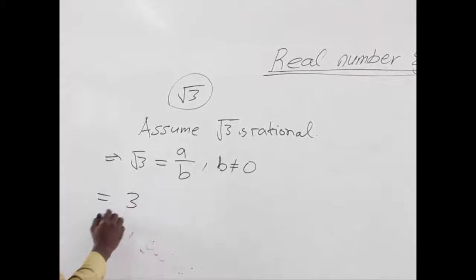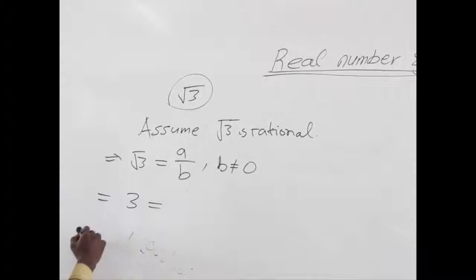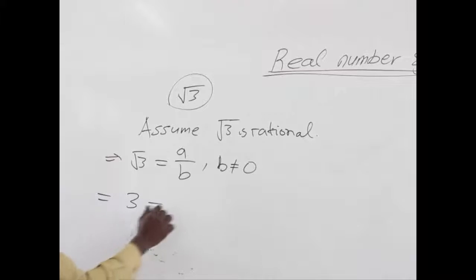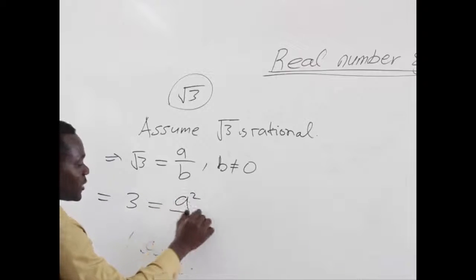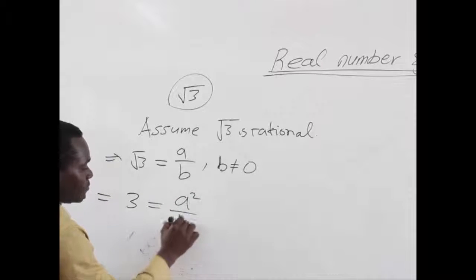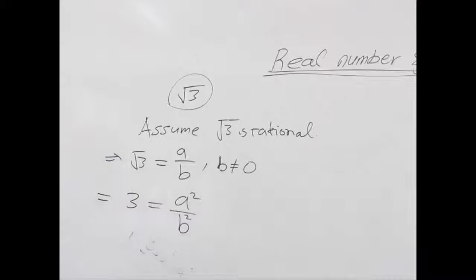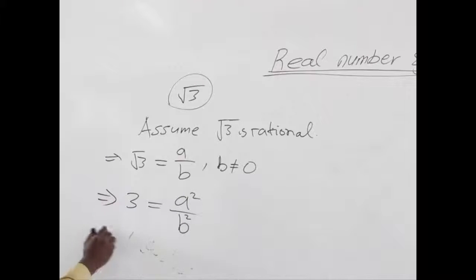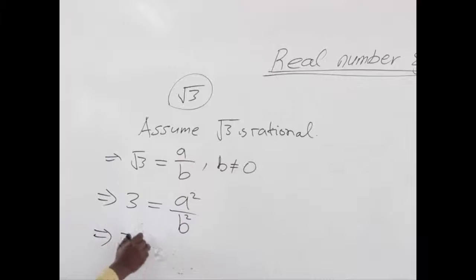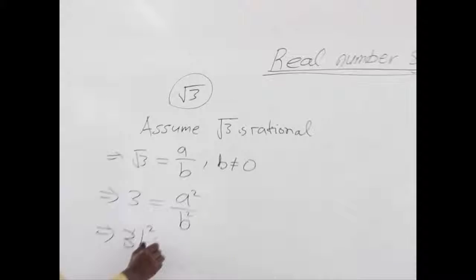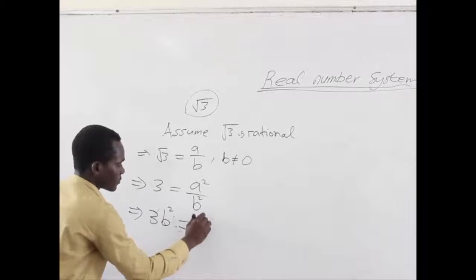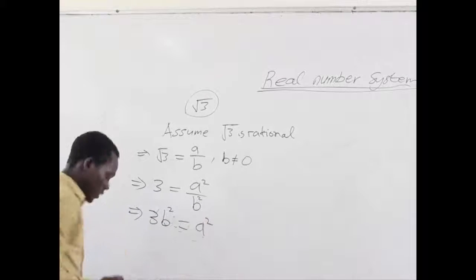When we square both sides of the equation, we are going to get 3 equals A squared over B squared, as our algebra tells us. Now, let's cross-multiply to get a linear expression. We are going to get 3B squared equals A squared.